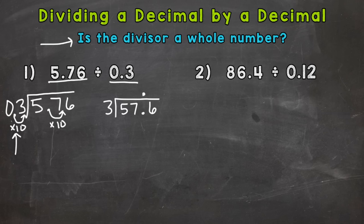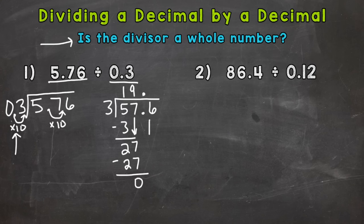Divide, multiply, subtract, bring down, and repeat. Five divided by three — one whole group. One times three is three, subtract to get two, bring down the seven. Twenty-seven divided by three is nine; nine times three is 27, subtract to get zero, bring down the six. Six divided by three is two; two times three is six, subtract and we get zero. Final answer: 19 and two tenths.